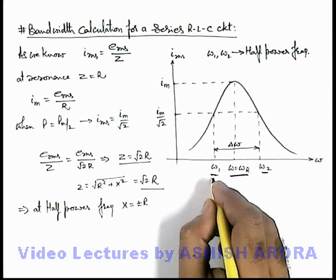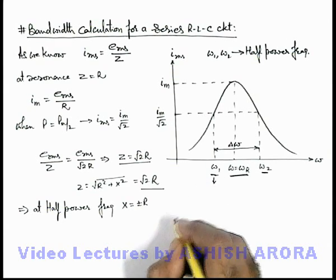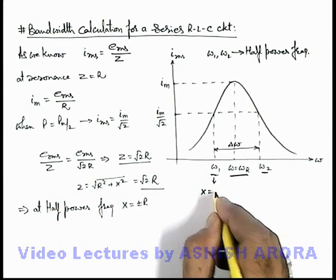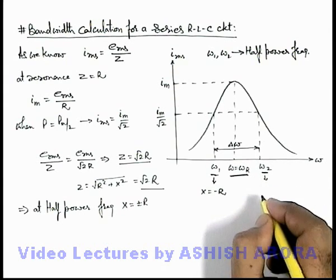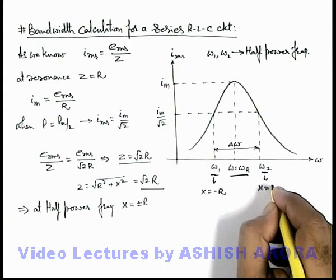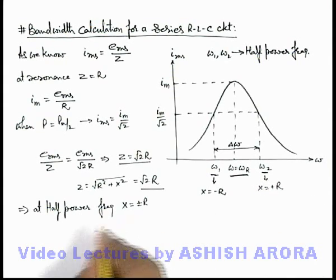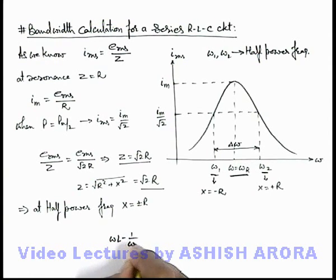So the frequency omega 1 is the situation when the value of X is equal to minus R, and omega 2 is the situation when X becomes equal to plus R. In the value of X, we know it is written as omega L minus 1 by omega C.